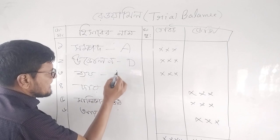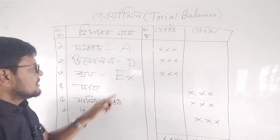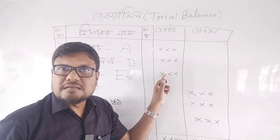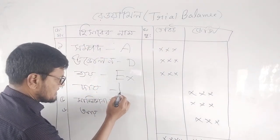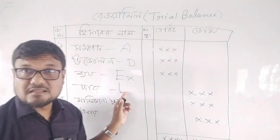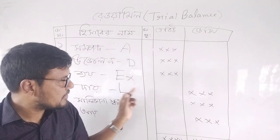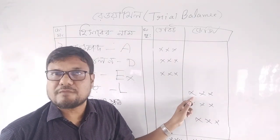Expenses will be on the debit side of trial balance. Liabilities will go on the credit side in the trial balance of accounting.